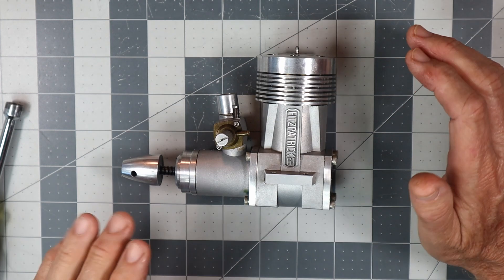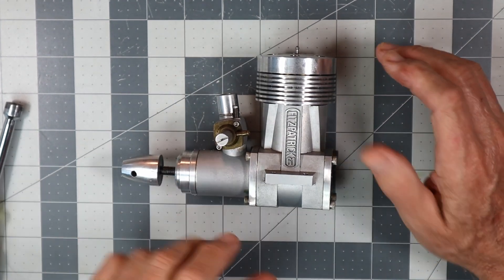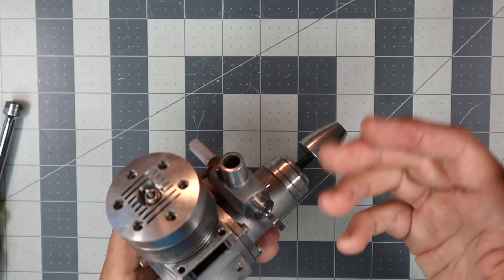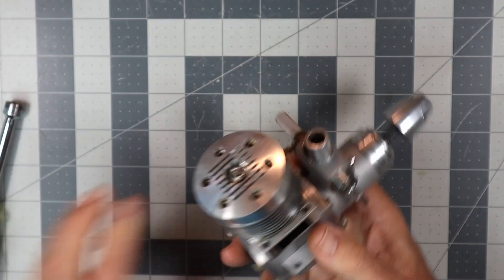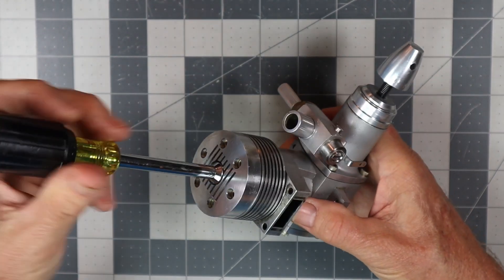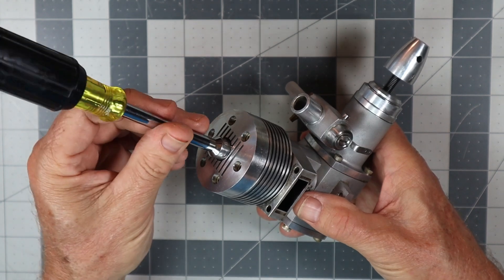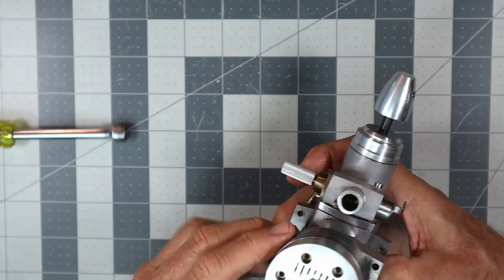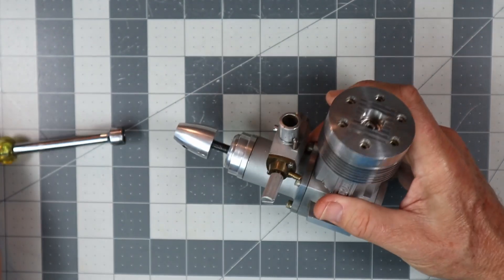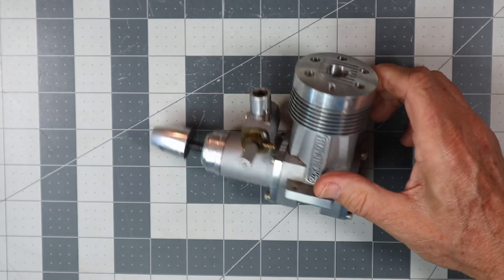There's not any nitro left in it, so any residue that's in this engine is not going to be a cause for concern for rusting the bearings because there's no nitro in the fuel at all to cause that.